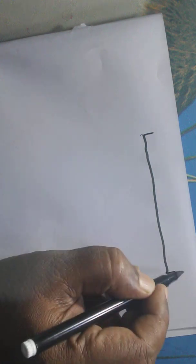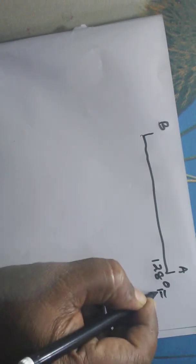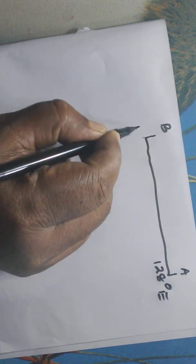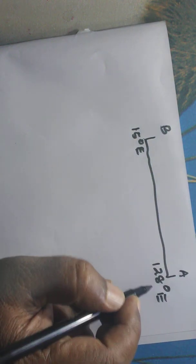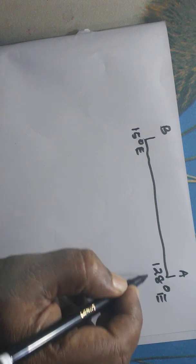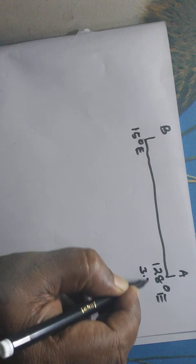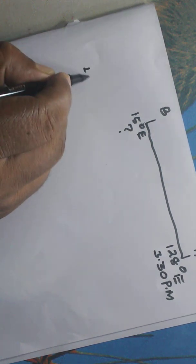Now let's do another sum of the same type. Here also two places are given — say place A is located at 128 degree east and place B is located at 15 degree east, so both of them are located in the same hemisphere. The time of place A is given as 3:30 p.m. We have to find out the time at place B.